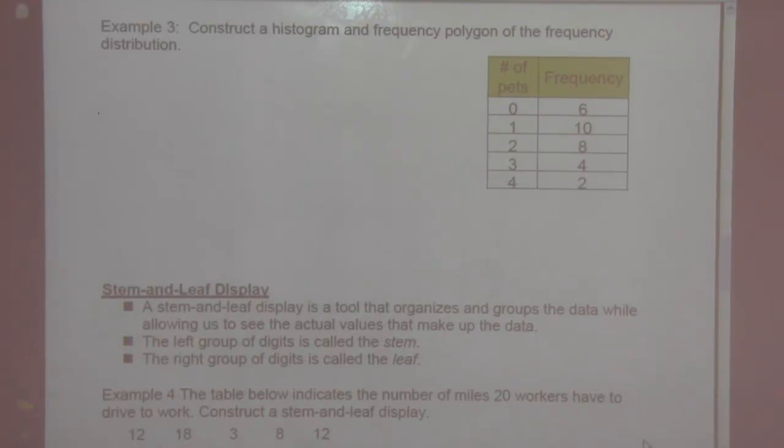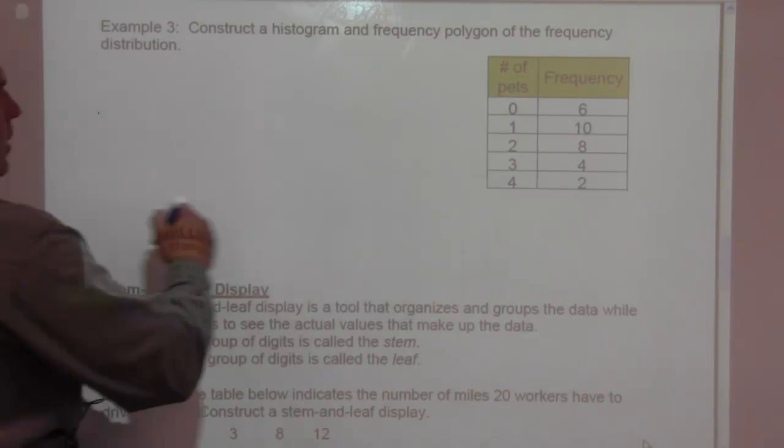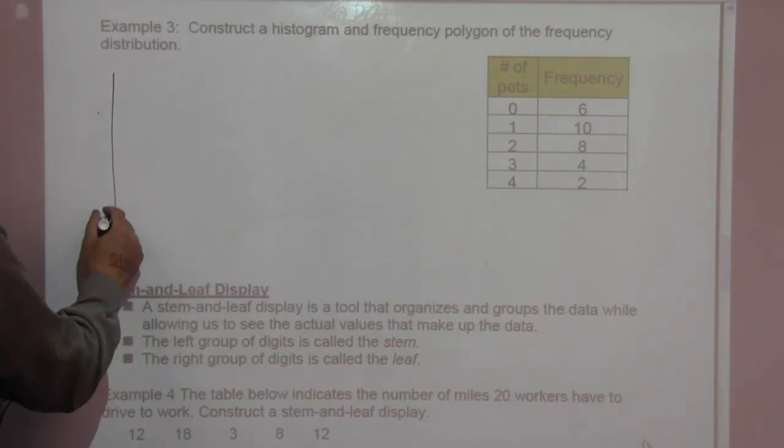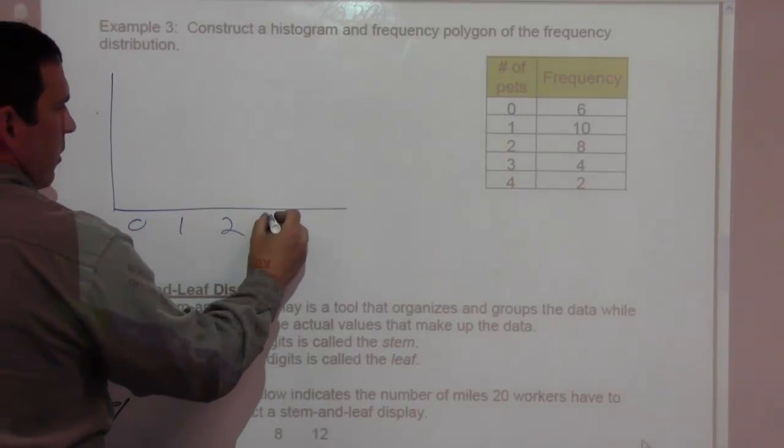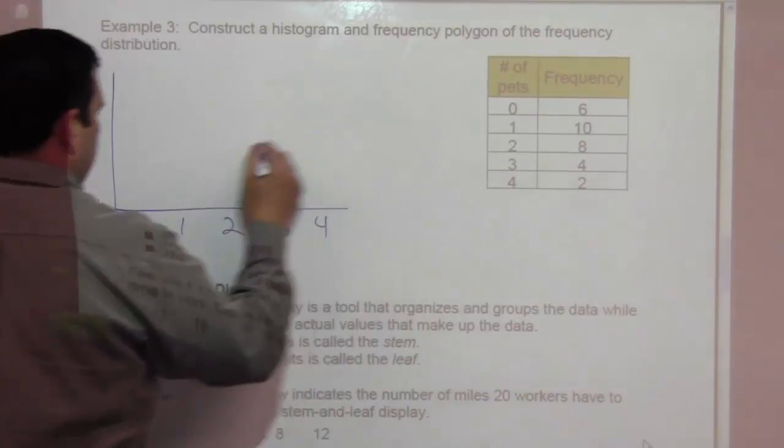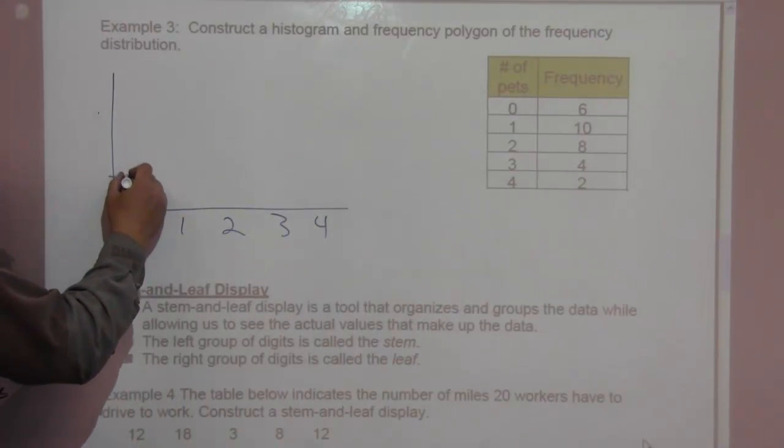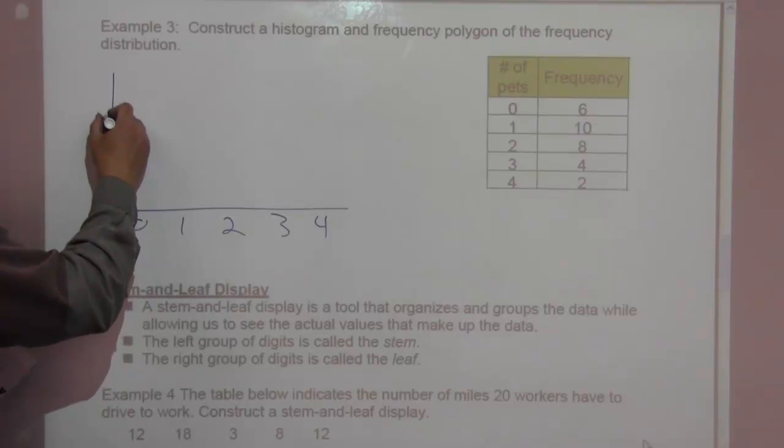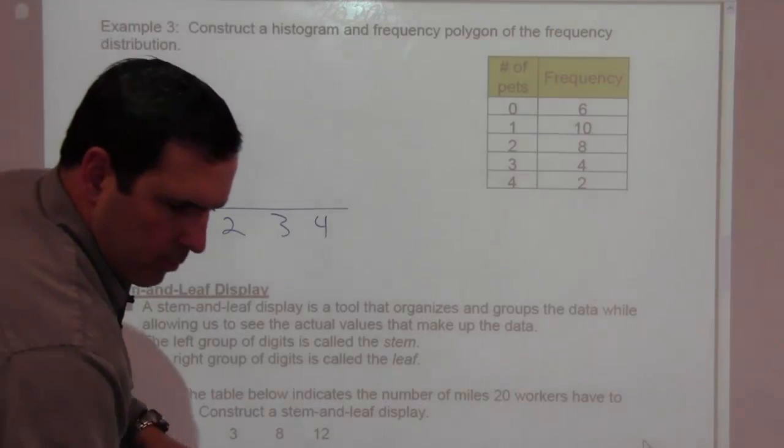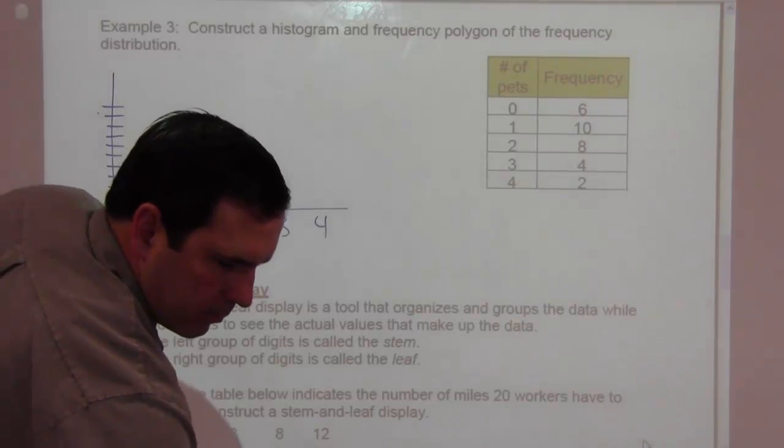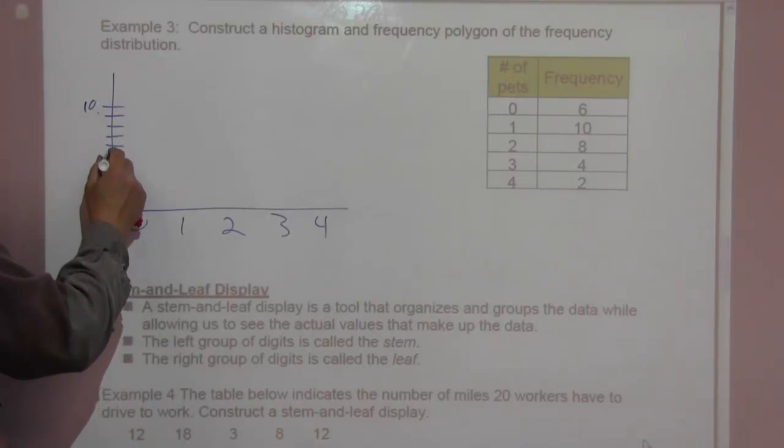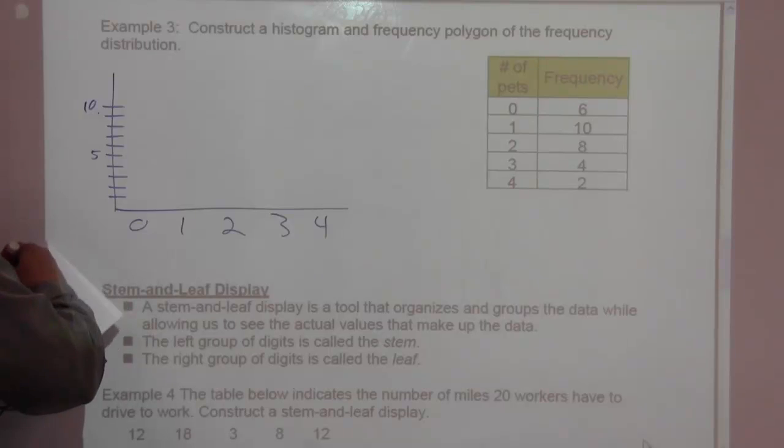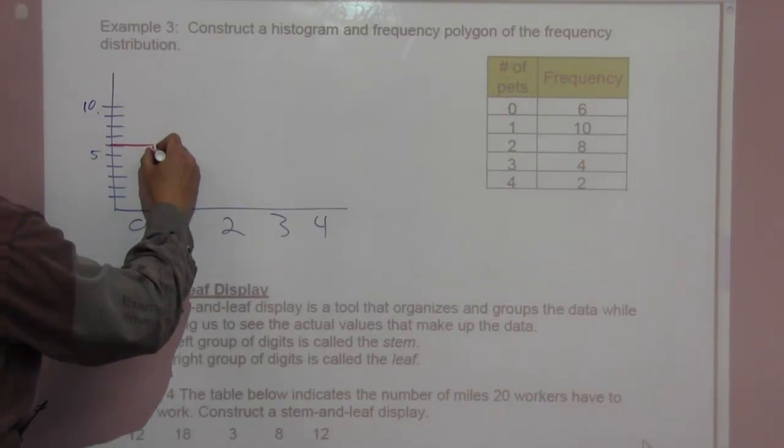Example three says to construct a histogram and a frequency polygon of the frequency distribution. So number of pets. We have zero, one, two, three, and four. We're going up to ten, so we'll scale this one, two, three, four, five, six, seven, eight, nine, ten. So zero pets. There are six people with zero pets. So it's going to go up to six over and down.